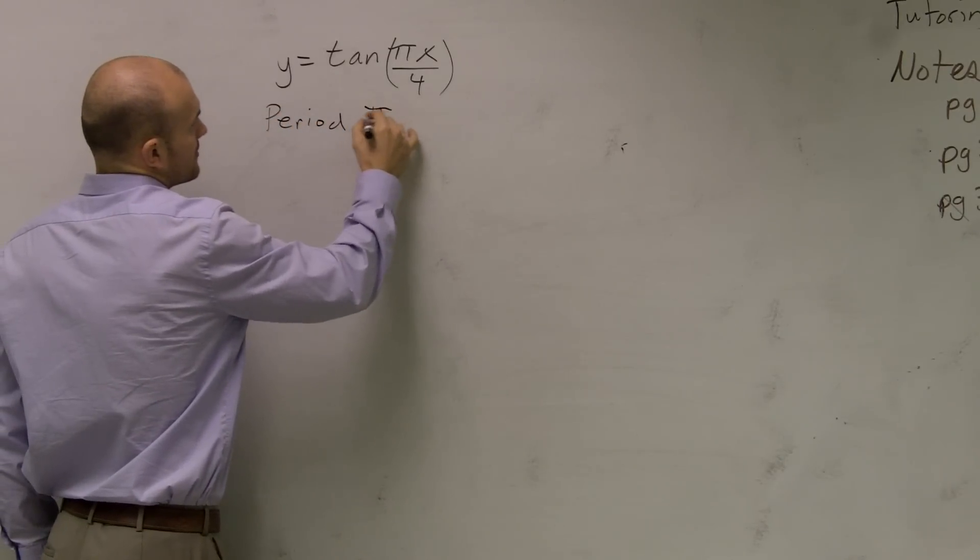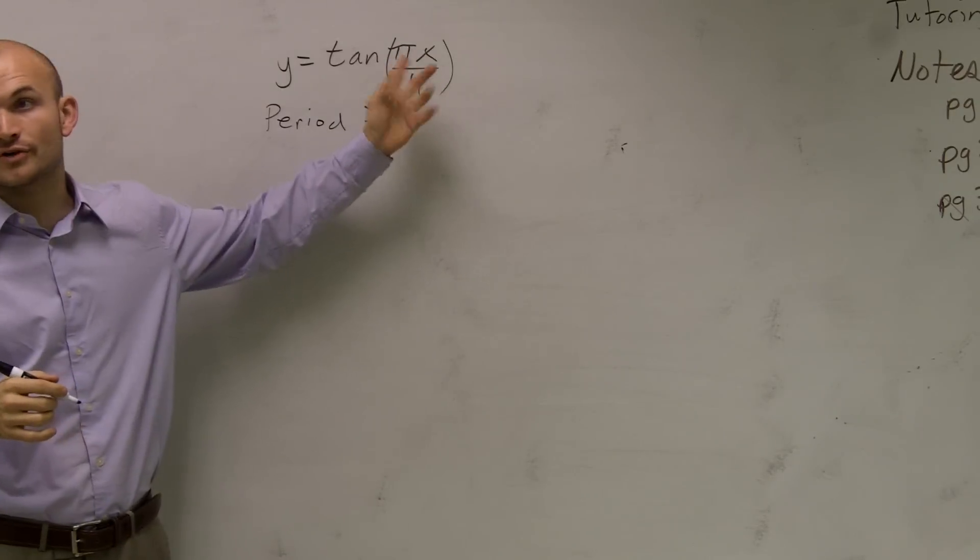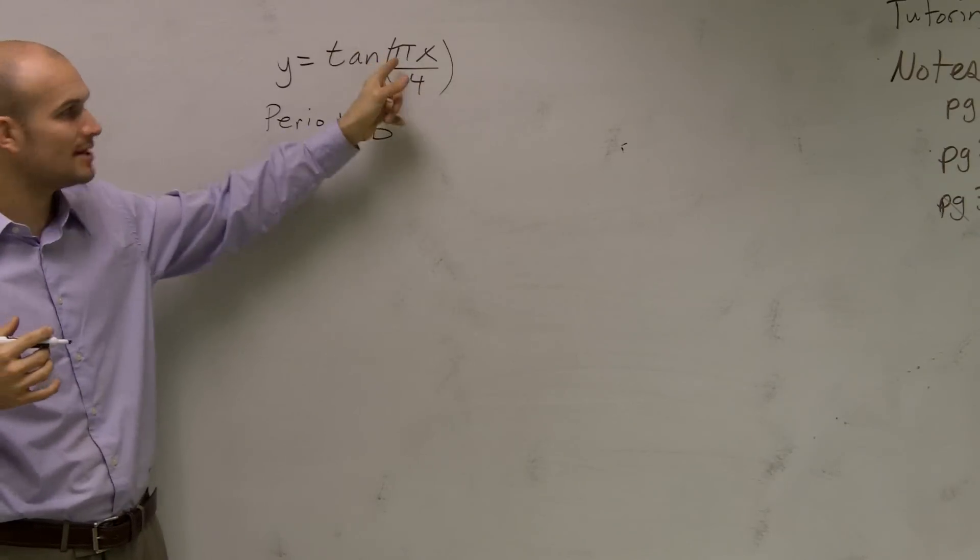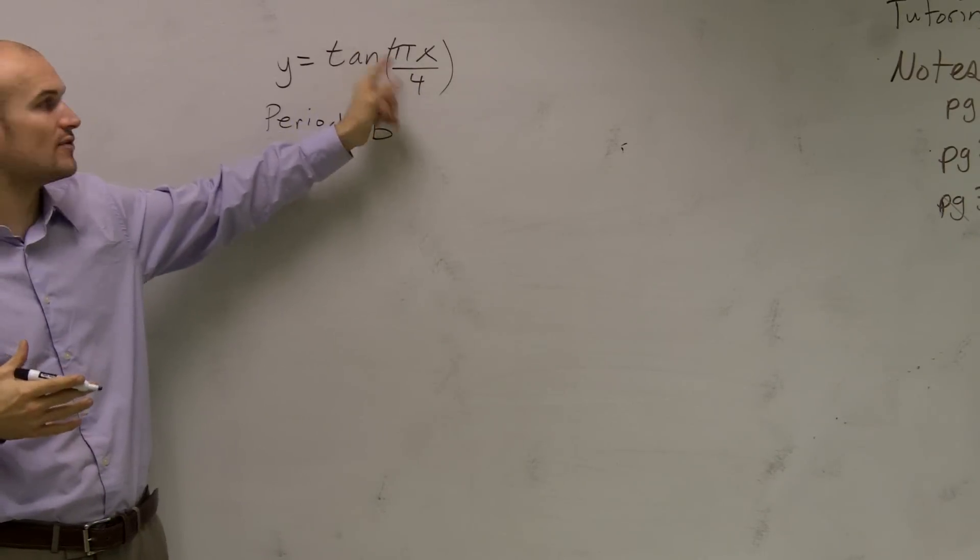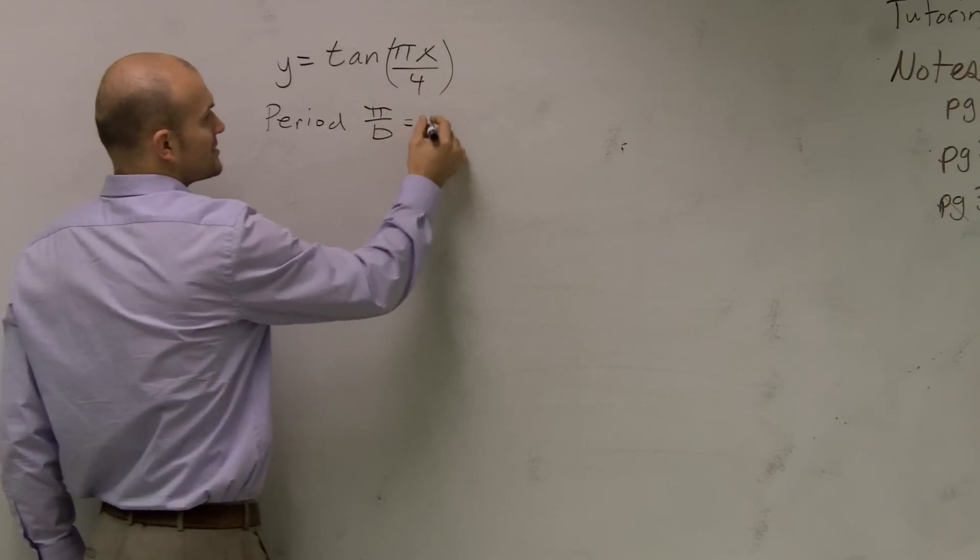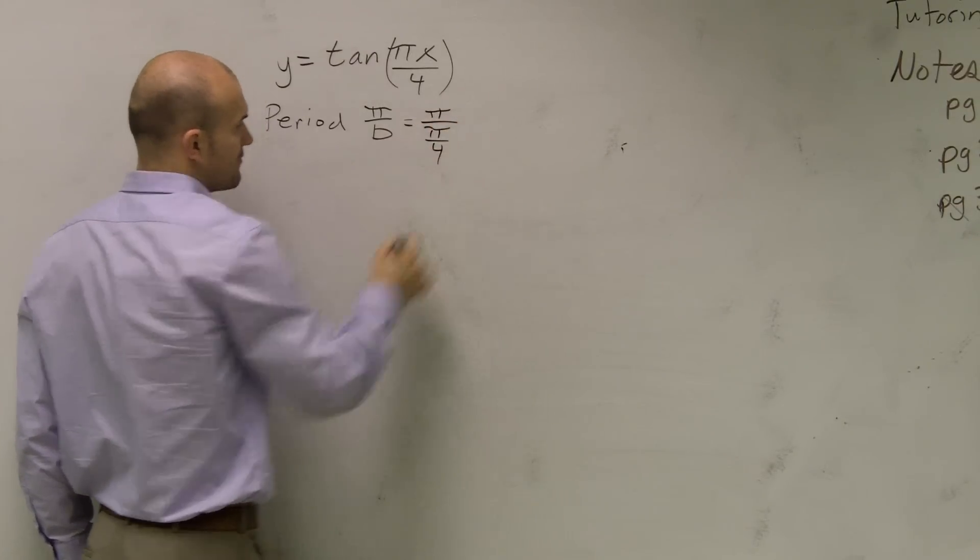The period is π over b, where b is your number in front of x. Here I have π in front. Remember, if you have that number divided by another number, you have to include that divided by 4. So my actual answer is π divided by π/4.